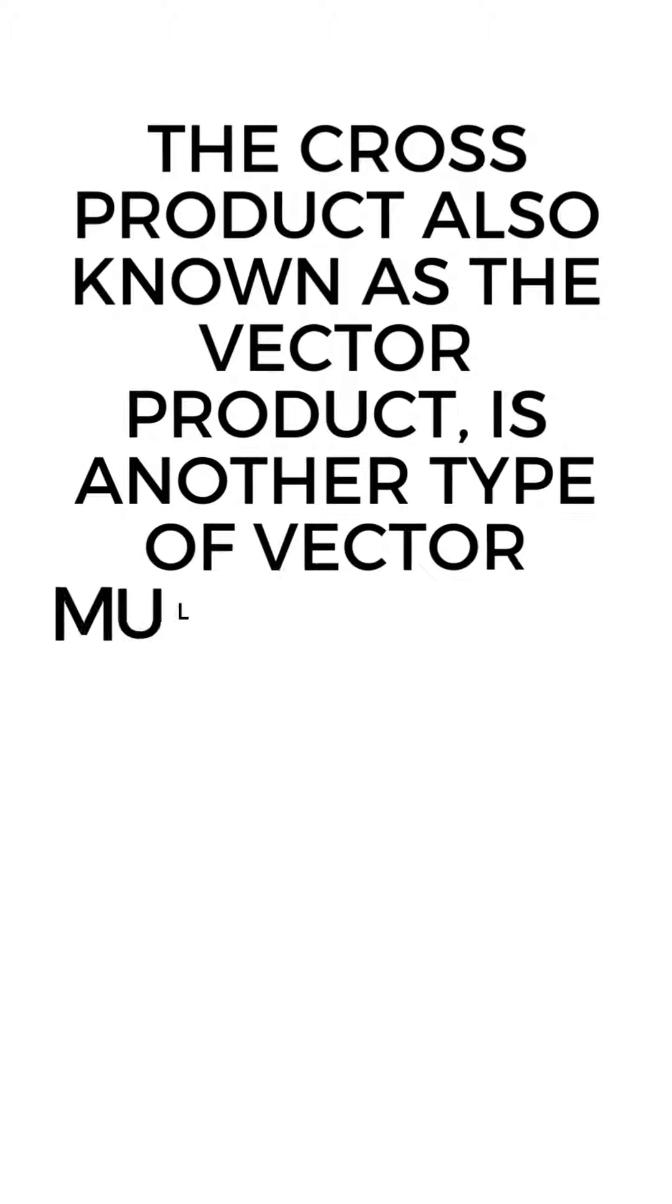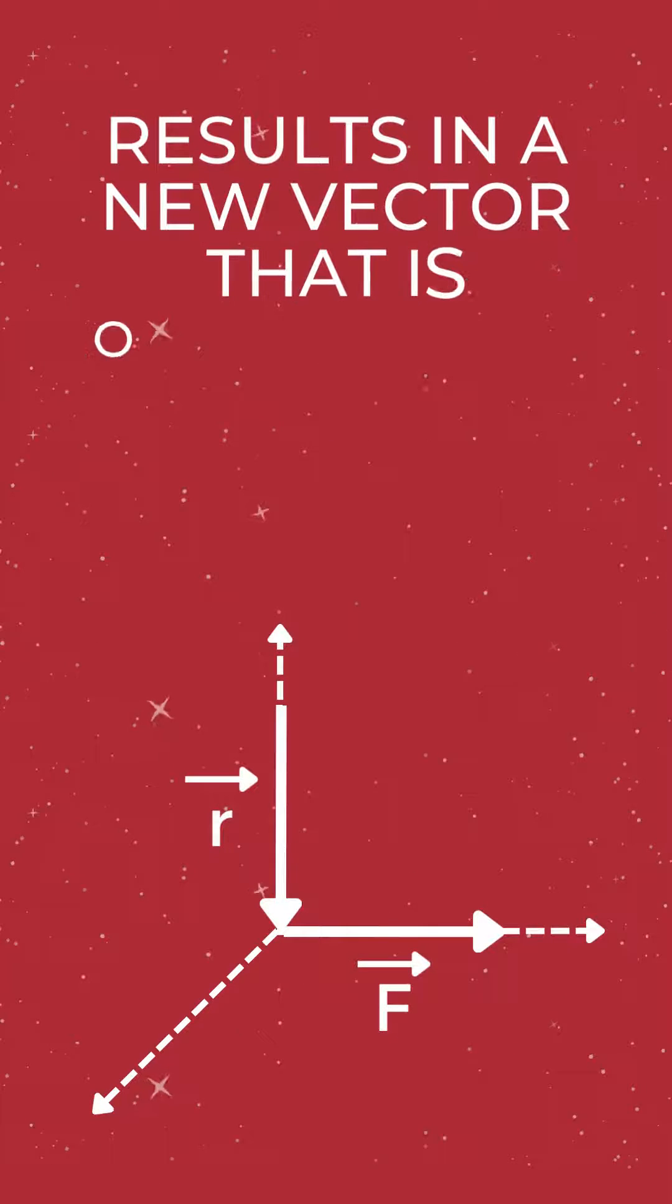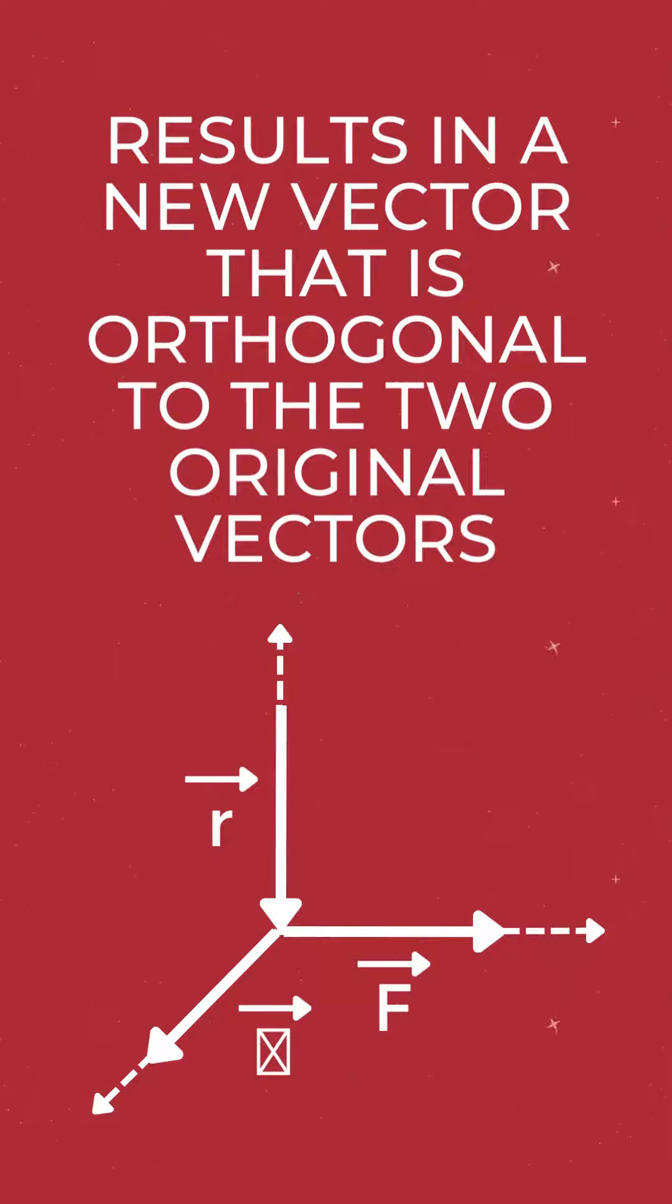Cross product, also known as the vector product, is another type of vector multiplication. It is only defined for vectors in three-dimensional space, and it results in a new vector that is orthogonal to the two original vectors.